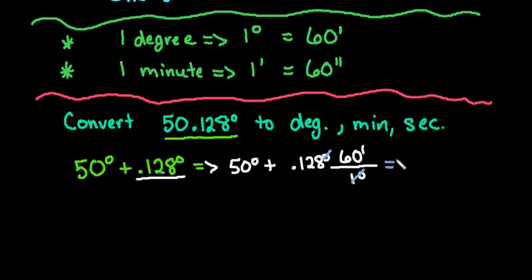So when we do that we are left with 50 degrees plus 7.68 minutes. Now what we're going to do is we're going to do the same thing that we did last time where we separated out. We're going to separate this part out because we don't want a fraction part in our minutes. We will have it in our seconds. It's okay to have a decimal within the seconds but not the minutes.